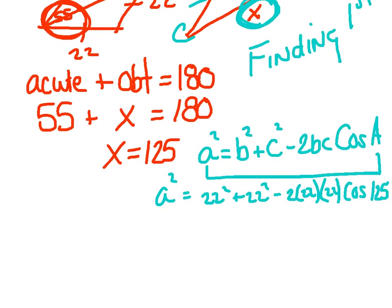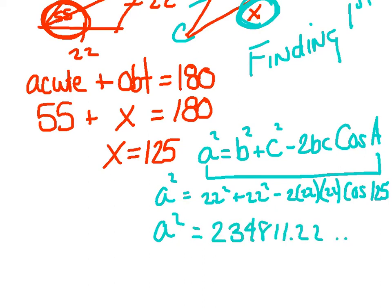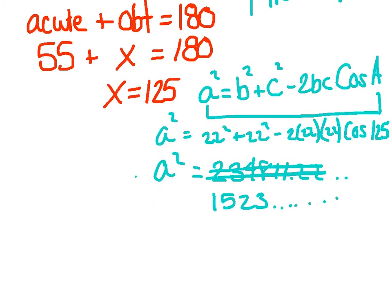The variable is by itself, so type all that into the calculator. I've got A squared equals 1523. Remember to take the square root of both sides, and A equals 39.